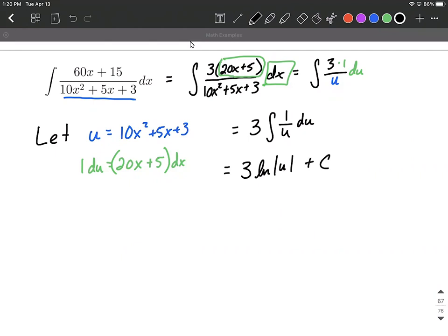And then we also want to include a plus C for there could be a constant added on to the antiderivative. Okay, we're almost there, but we're in terms of u. The original started in terms of x. So to finish this up,